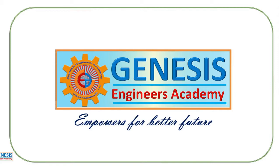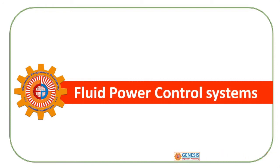Welcome to Genesis Engineers Academy. In this video I am going to discuss fluid power control systems. Fluid means gas or liquid. In fluid power control systems we use both air and oil. It is an essential system for automation in almost all industries, starting from automobiles to any automation of movement and actuation of devices.